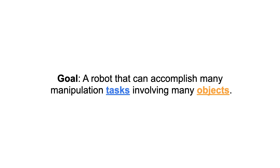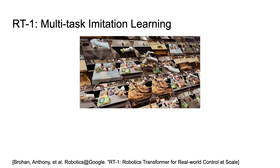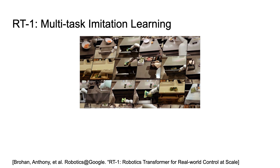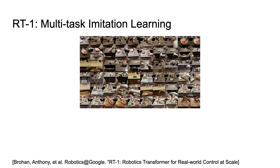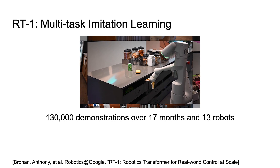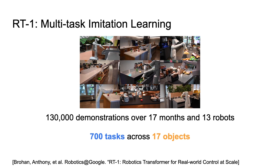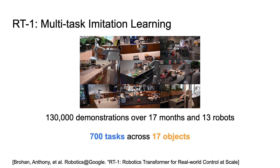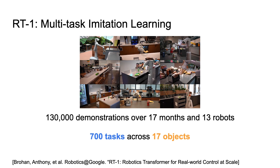We begin with our motivation of creating a robot learning method that can enable a robot to do many manipulation tasks involving many objects. A promising approach towards this goal is Robotics Transformer 1, a multi-task imitation learning method demonstrating impressive control performance on a variety of manipulation skills in an office-kitchen setting. One of the most important aspects of RT1 was large-scale data collection of over 130,000 demonstrations collected over 17 months and 13 robots. While this enabled strong performance on over 700 different tasks, this large, expensive dataset focused on just 17 objects, limiting RT1 from generalizing zero-shot to any novel object.